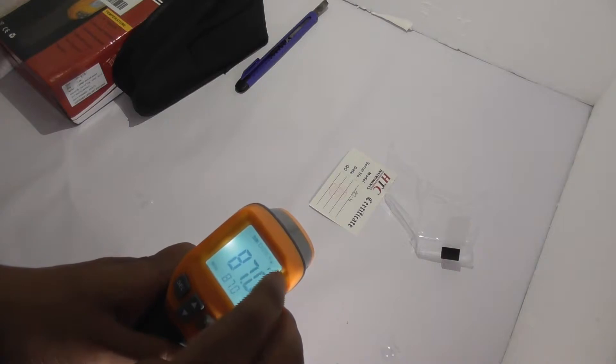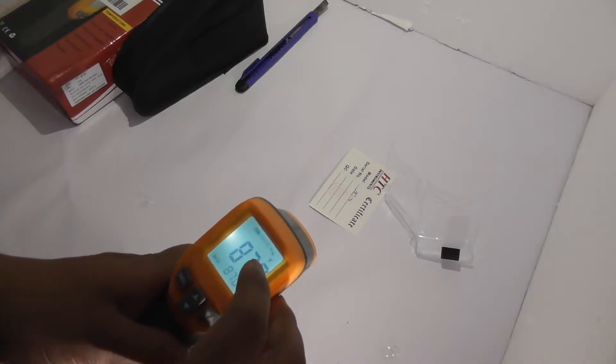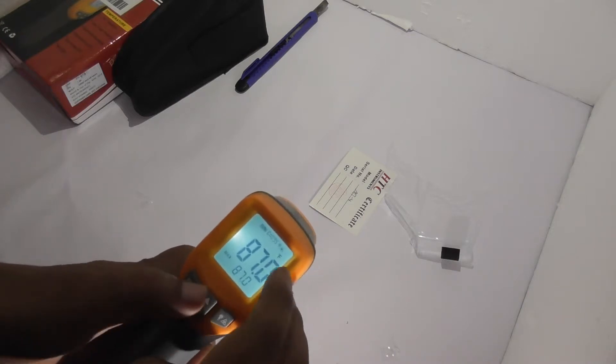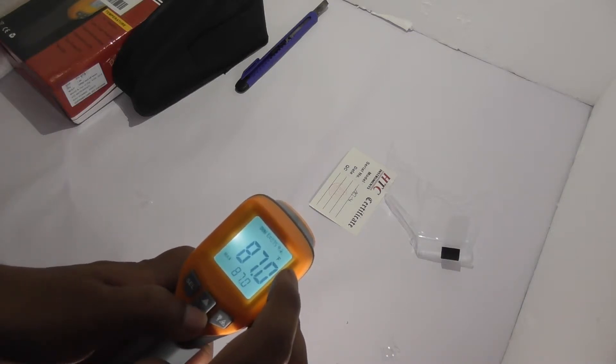When the battery gets drained, it will show the low battery icon. As I have inserted a new battery, it's not showing. It also shows Fahrenheit or Celsius emissivity, and you can change it into different modes.